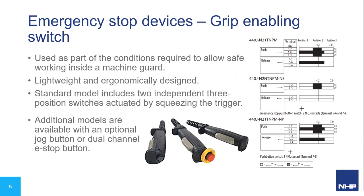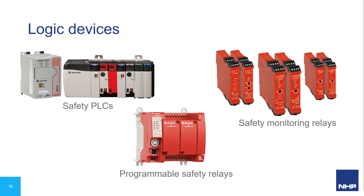Finally for input devices, the grip switch is used as part of the conditions to allow safe working inside a machine guard — typically when you need to enter a guarded area while the machine operates at safe speed or when quick access to turn the machine off is needed. Squeezing the trigger enables the machine; releasing it turns it off. Some models offer an optional jog button or a dual-channel e-stop button. That covers the safety input devices — now we move to the logic devices, ranging from simple single-function safety relays to fully-fledged PLCs with both standard and safety functionality.